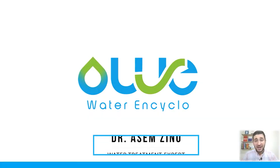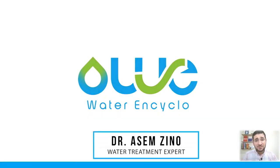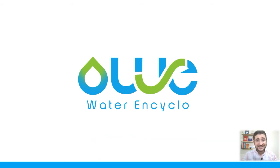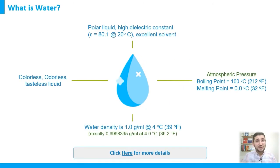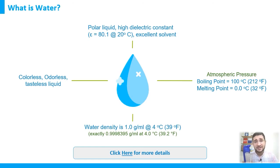Welcome. In this part we will discuss the most important chemical and physical properties of water. As you know, water is a colorless, odorless, and tasteless liquid. It's one of the main things we need for our lives, for our bodies, and for other species living on this planet — animals, plants, and others all need water.